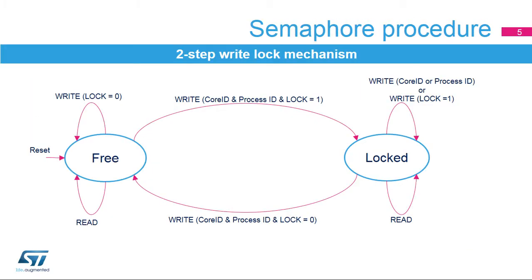In the two-step write-lock procedure, a free semaphore will be locked by writing 1 to the lock bit in the semaphore write-read register. The core ID and process ID used during the write will be stored in the semaphore. A process has to check that the semaphore is locked by it by reading back the write-read register. If the read-back semaphore core ID and process ID matches the one written by the process, it is locked by it. If the core ID or process ID doesn't match, the semaphore has been locked by another process. A locked semaphore can only be unlocked by writing the lock bit to 0 with the corresponding core ID and process ID. Writing the wrong core ID, process ID, or writing the lock bit with 1 will keep the semaphore locked.